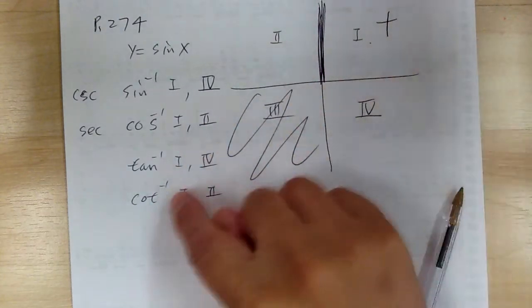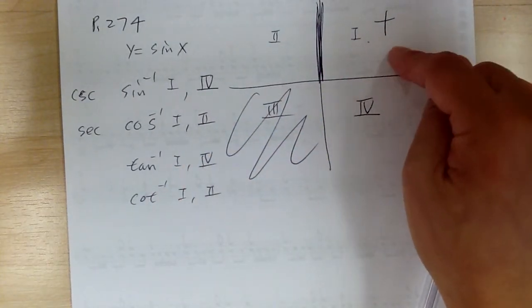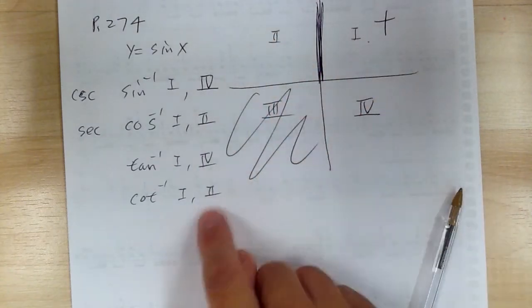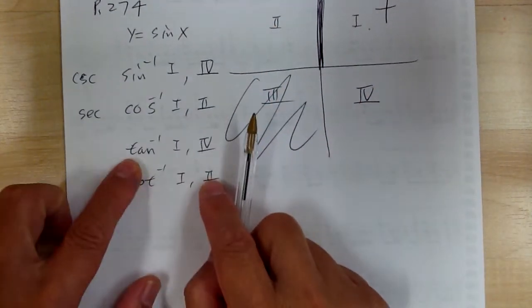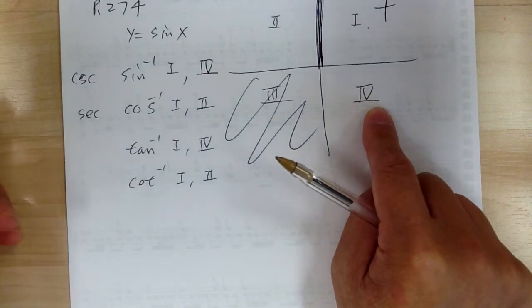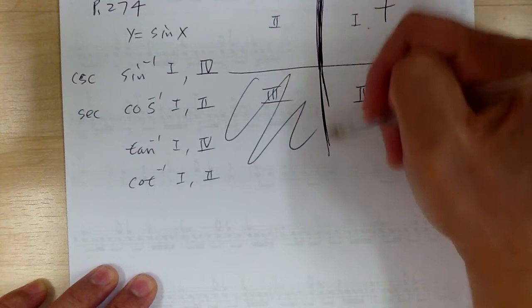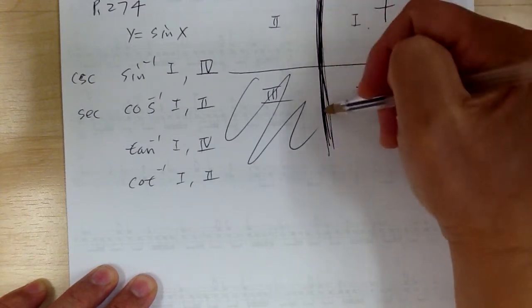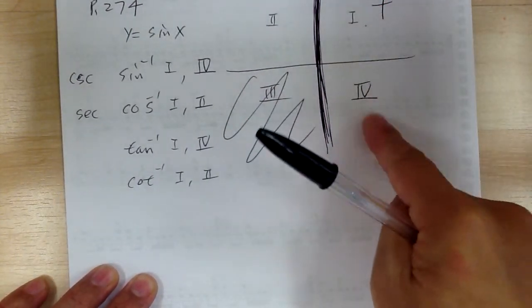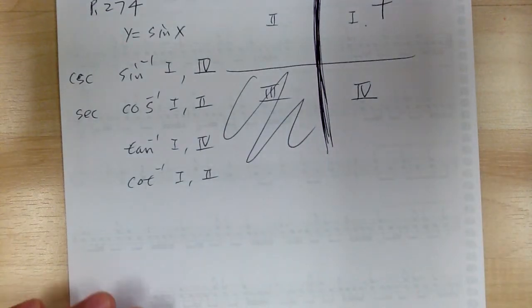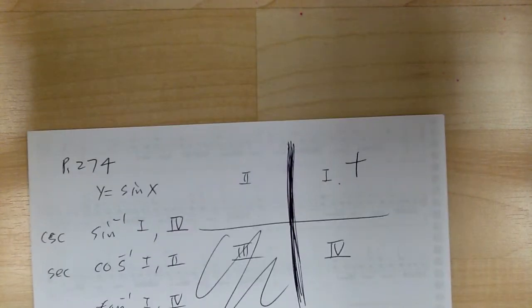For inverse cotangent, you use quadrants one and two. Again, you never use quadrant three — it's the forbidden zone. Every inverse function will have quadrant one because that's positive, then you figure out which one gives the negative. For inverse tangent, both quadrant two and four give negative, but you use quadrant four because you can't cross over the undefined asymptote. Those are the background details on inverse functions. Now let's go over how to evaluate them — let's go to example one on page 278.